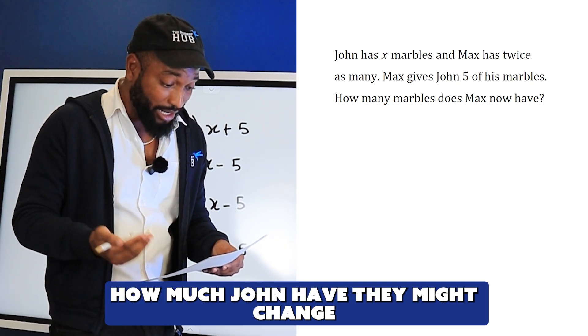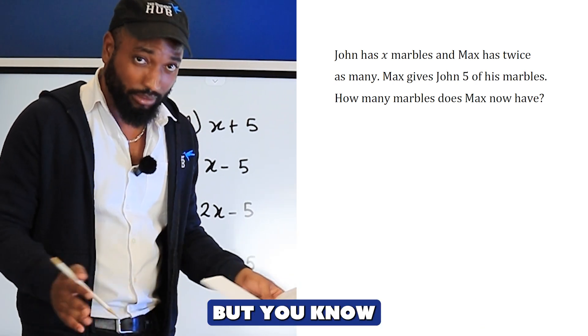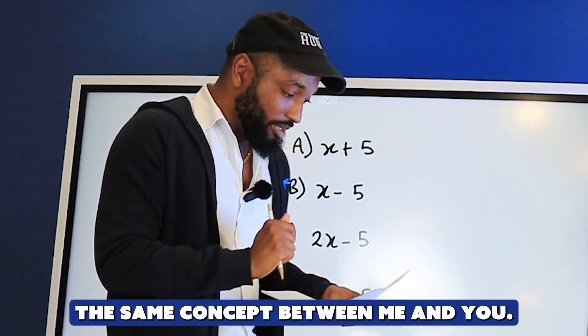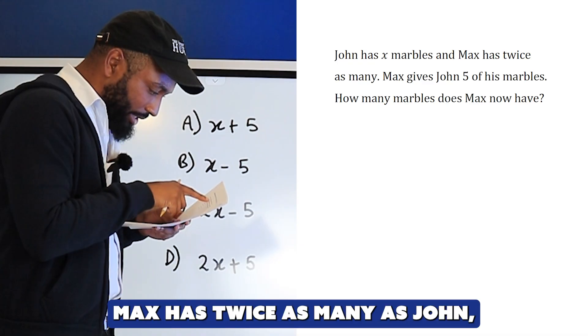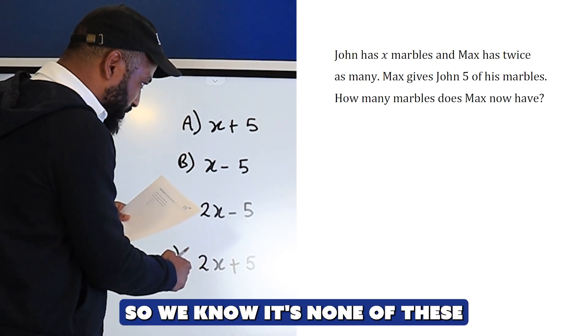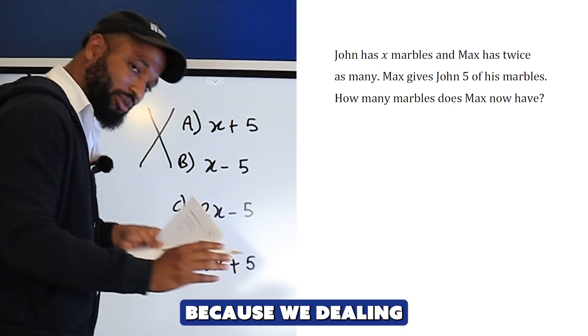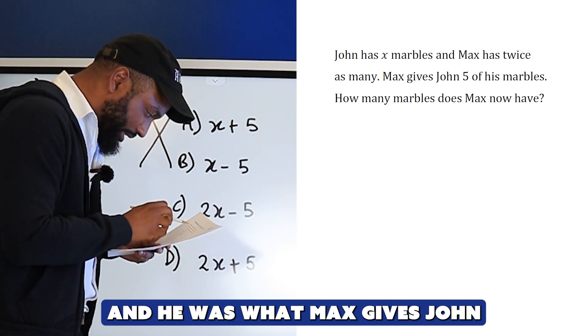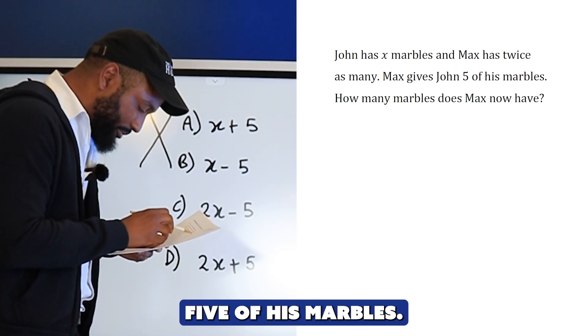Max has twice as many as John, so Max has 2x. We know it's none of these because Max has 2x, and Max gives John five of his marbles, so Max lost five. The answer is 2x - 5.